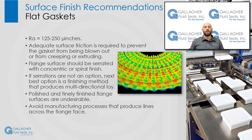The next product category is cut flange gaskets. The recommended range of RA values is 125 to 250 micro-inches. Adequate surface friction is necessary to prevent gasket failures, which include excessive creep, excessive extrusion, and blowout. Polished and finely finished flange surfaces are undesirable. The flange surface should be serrated with a concentric or spiral finish. If serrations are not an option, the next best option is a finishing method that produces multi-directional lay. Also, avoid manufacturing processes that produce lines across the flange face, which will yield direct lead paths like those produced by linear surface grinding.